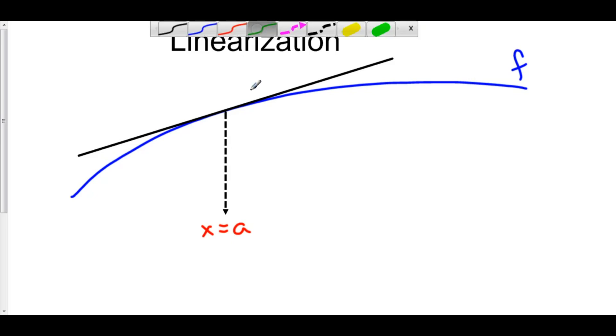Now, look at some values on our function that are relatively close to x equals a. This tangent line is actually a pretty good approximation for those function values, both to the right of x equals a, as well as to the left of x equals a.